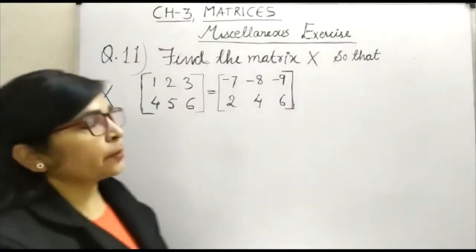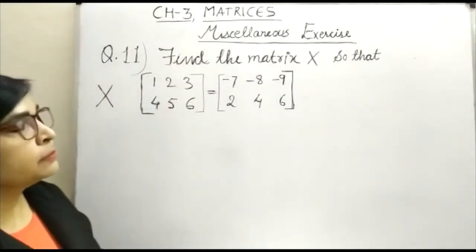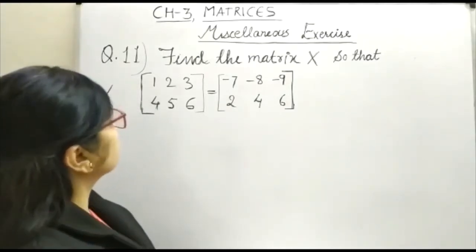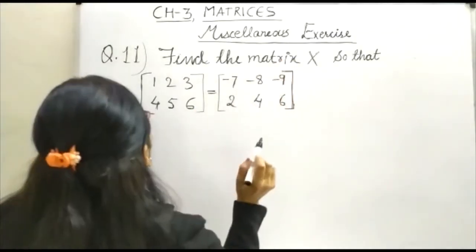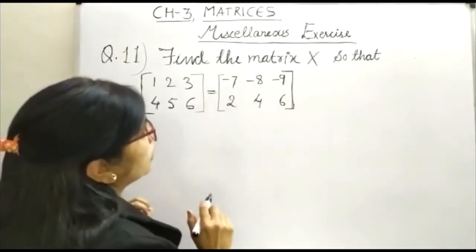Hello everybody, today in chapter 3 matrices, we are going to discuss question number 11 of miscellaneous exercise. In this question, it is said that find the matrix X so that X multiplied by another matrix gives us the matrix.